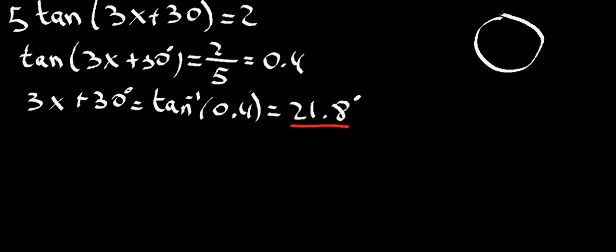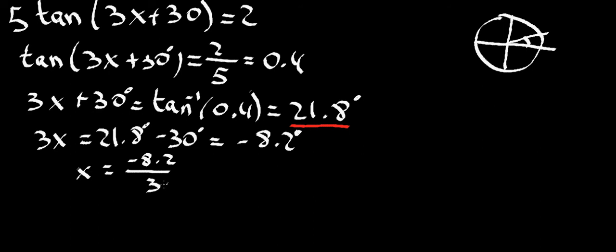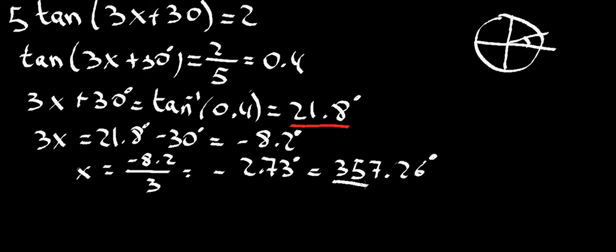I'm going to draw my unit circle and put the value in there already so I don't forget — that's my 21.8. Now we calculate the x value that corresponds to that: 3x is equal to 21.8 minus 30, all in degrees. That's minus 8.2 degrees. That means x equals minus 8.2 divided by 3, which is minus 2.73 degrees. Written as a positive angle, that's 360 minus 2.73, giving us 357.26 degrees. This is the first solution to our problem.